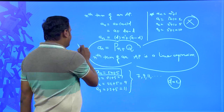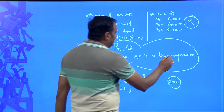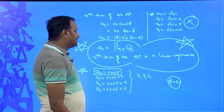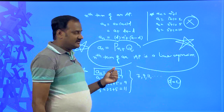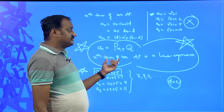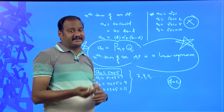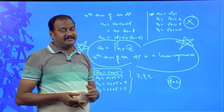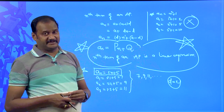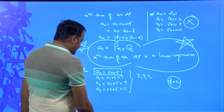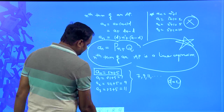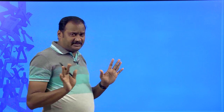That is why the nth term of an arithmetic progression will be of the form p·n + q. Every linear expression forms the nth term of an arithmetic progression. So we have understood that the nth term of an arithmetic progression is always a linear expression.